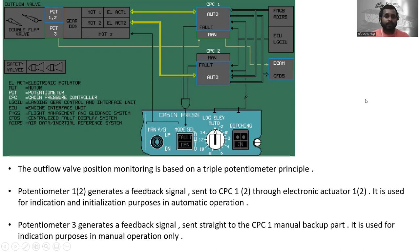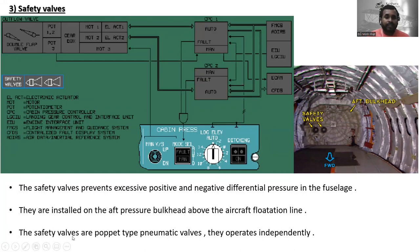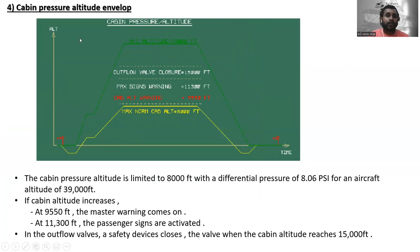Now let's go to the safety valves. The aircraft has two safety valves. The safety valves prevent excessive positive and negative differential pressure in the fuselage, and they are installed on the aft pressure bulkhead above the aircraft flotation line. The safety valves are poppet-type pneumatic valves and they operate independently.